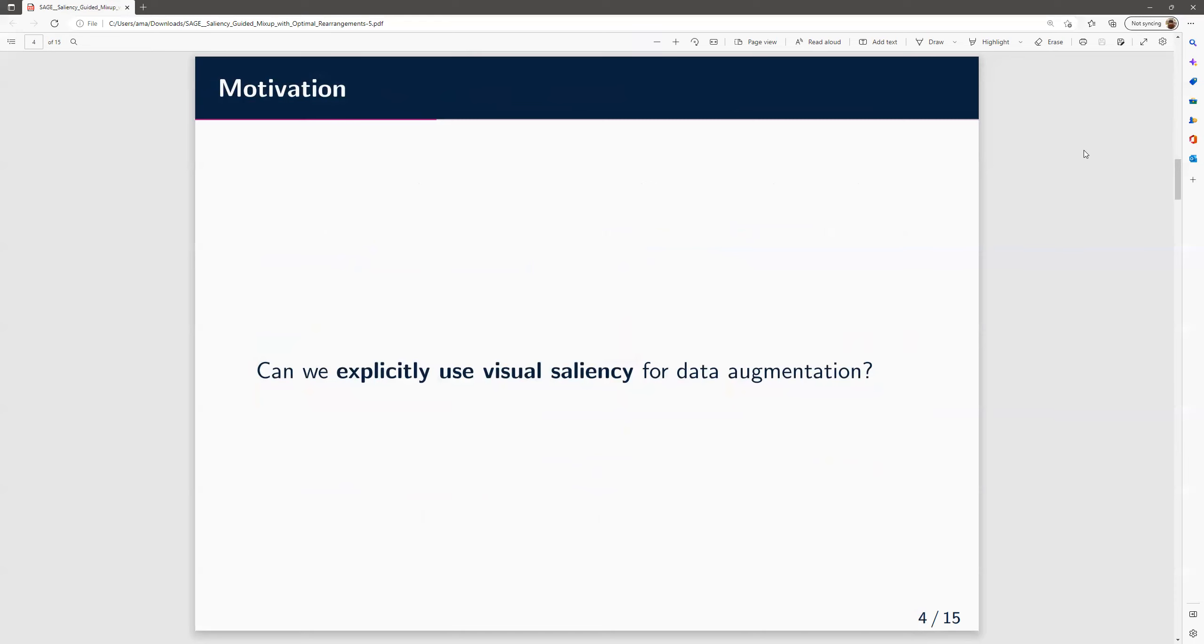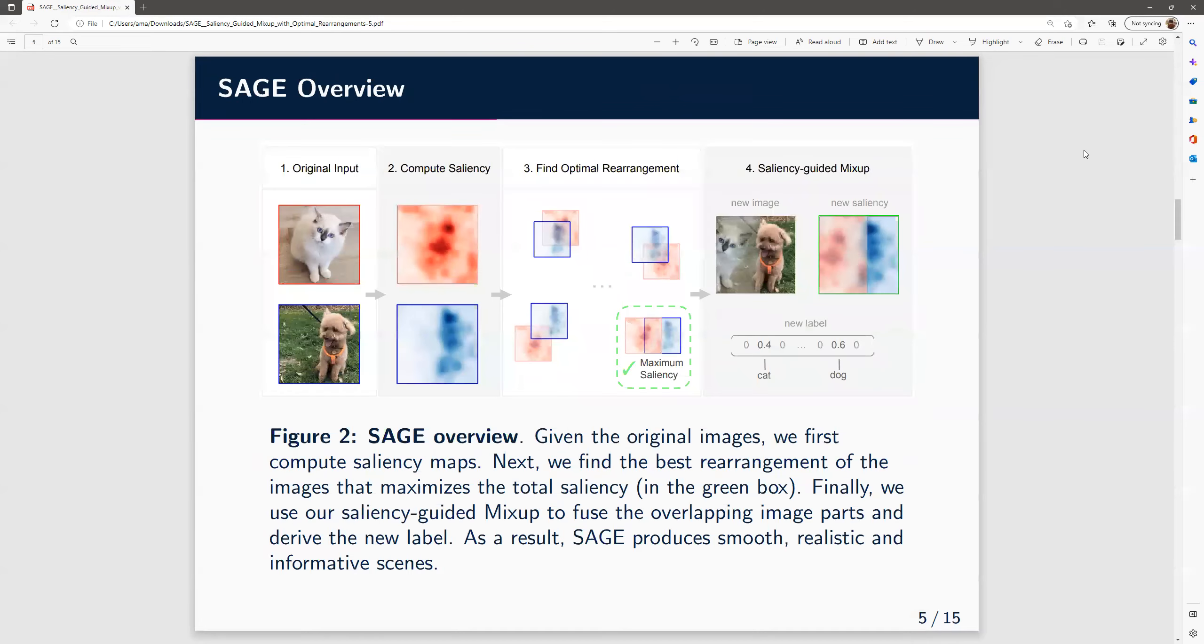The motivation of this project is to explicitly use visual saliency in the process of data augmentation. The main idea behind SAGE is to synthesize novel images and their labels by blending pairs of training samples using spatial saliency information as guidance for optimum blending.